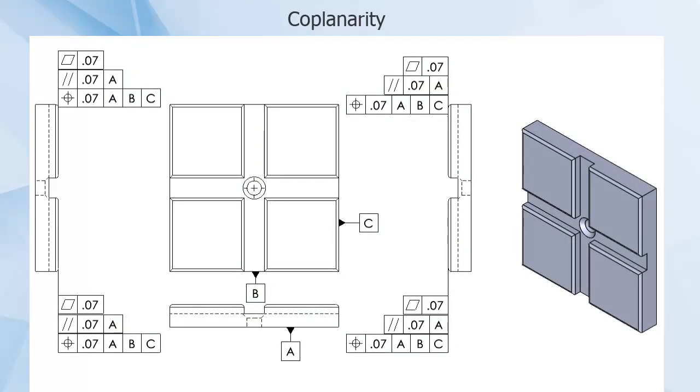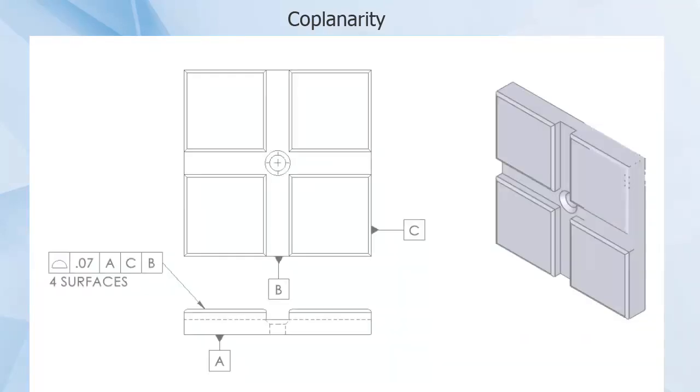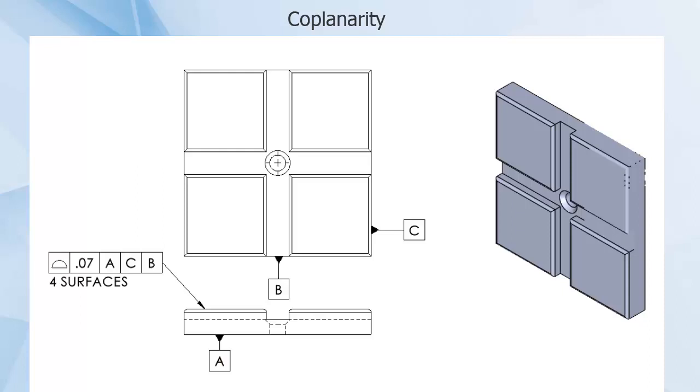Instead of combining three or more different controls, a single planar tolerance zone that spans all four surfaces can be called out with a profile of a surface feature control frame with the modifier four surfaces placed below it.